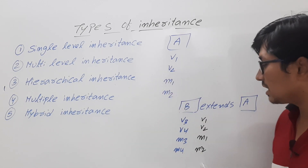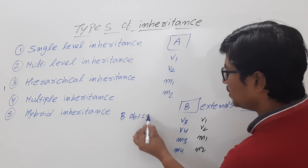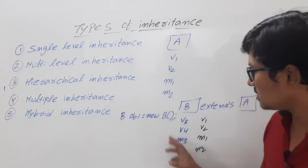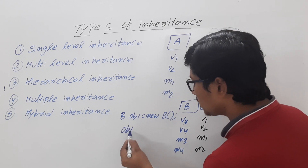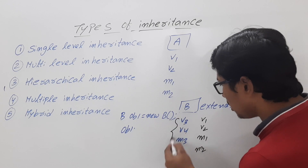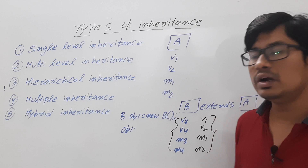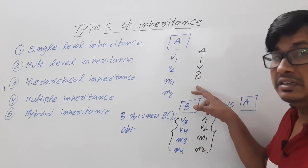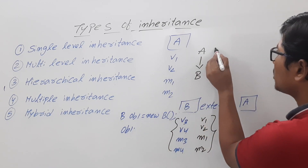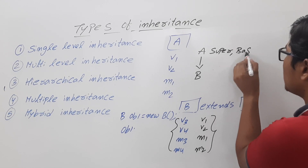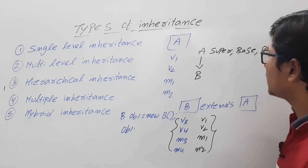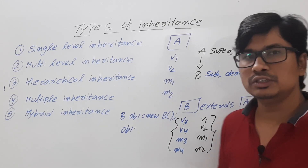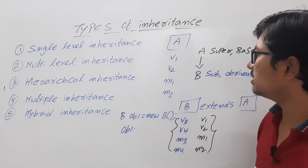Class B also has its own variables v3, v4 and methods m3, m4, but it also inherits variable v1, v2, method m1, m2 from class A. If you create an object for class B using the syntax 'ClassName objectName = new ClassName()', you can access the members of both class B and class A. This is the meaning of single level inheritance — class B is the subclass, class A is the superclass.